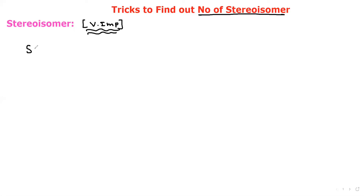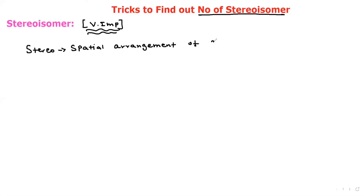What is stereo? Stereo refers to the spatial arrangement of atoms in a molecule.